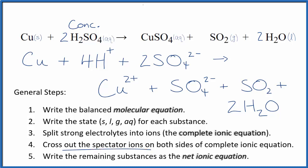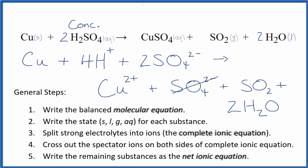Now we can cross out spectator ions — they're on both sides of the complete ionic equation. This one's a little tricky: we have two sulfate ions on one side and just one on the other, so we cross one out and change the two to a one. We don't write the one by convention. Everything else is unique.